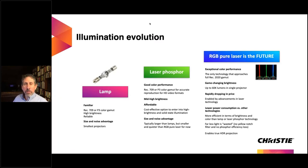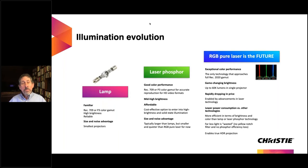Looking at illumination technology: in the past, projectors used lamps — mercury, xenon, halide, or incandescent — to illuminate film, DLP, LCD, or whatever projection technology. Since then, we've developed laser phosphor, which takes a blue laser and converts it to yellow light. The color space of laser phosphor is nowhere near that of a pure RGB laser system, which is the one that allows us to approach or even exceed full Rec 2020 compliance in color volume.